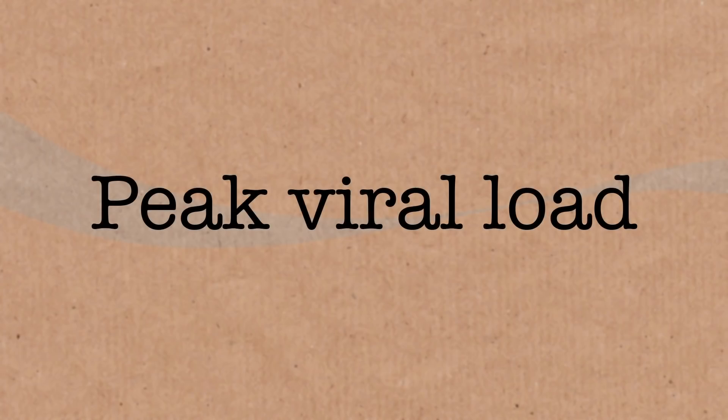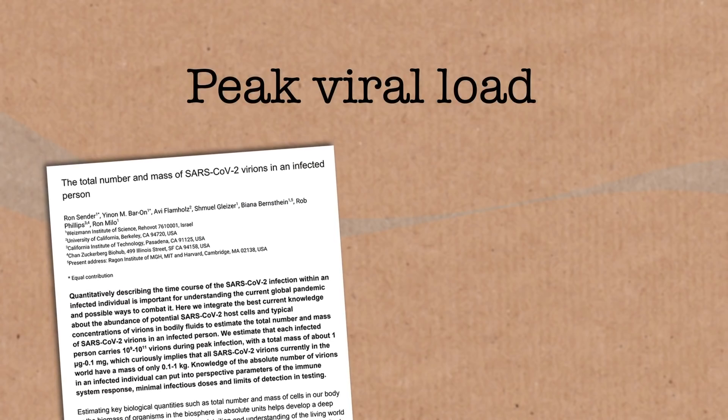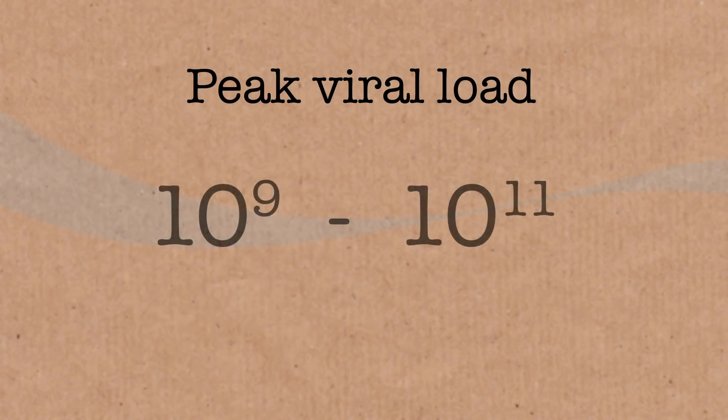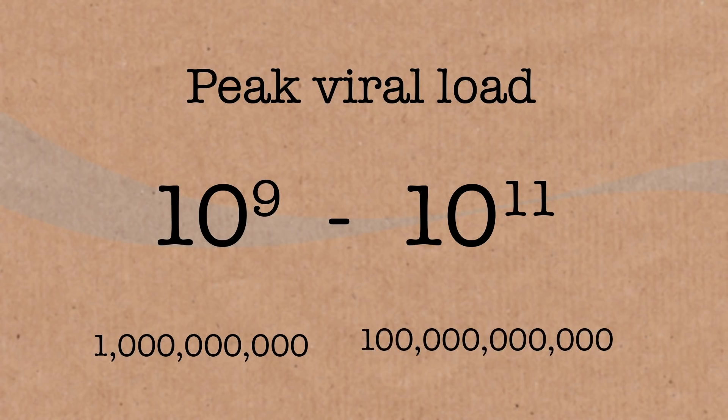With 3 million people newly infected each day, we've got to think about how many virus particles each person has, and how long they're infectious for. We need to know their peak viral load — how many particles they have when they're at their most infectious. I found a paper which estimates the peak viral load in humans to be between 10 to the 9 and 10 to the 11 particles — that's a billion to 100 billion particles per person.